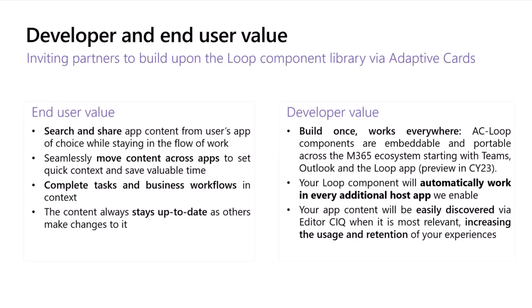Before the demo, I'll quickly emphasize the developer and end-user value. End users should be able to search and share external content from their app of choice — for example, a user comfortable working in Outlook should be able to share content there and also move it to Teams seamlessly. That saves time because another user who is more comfortable in Teams can access that content without a context switch. Users should also be able to complete tasks and workflows in-line, and the content should always stay live. The developer promise is build-once, work-everywhere — adaptive card-based loop components adhere to the same model we have for most platform capabilities.